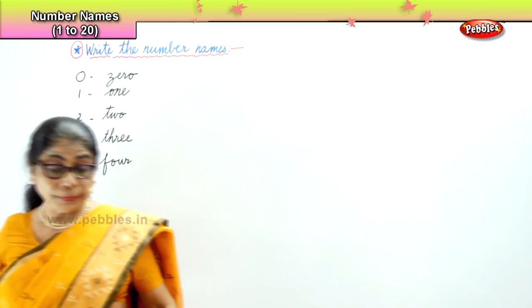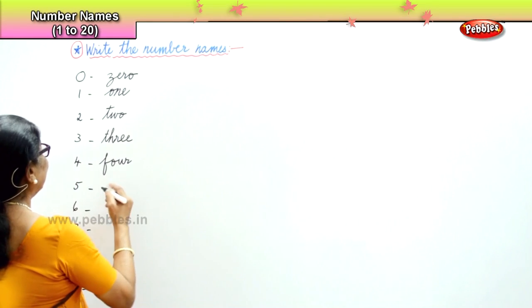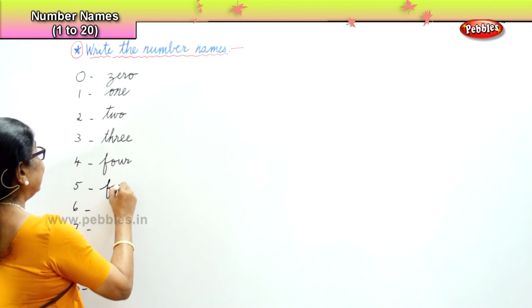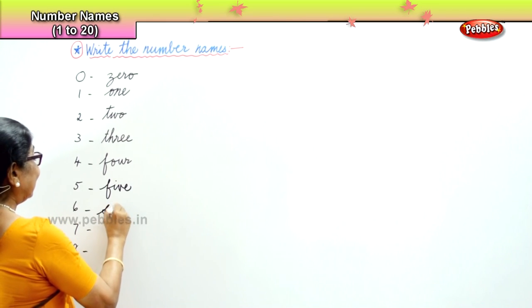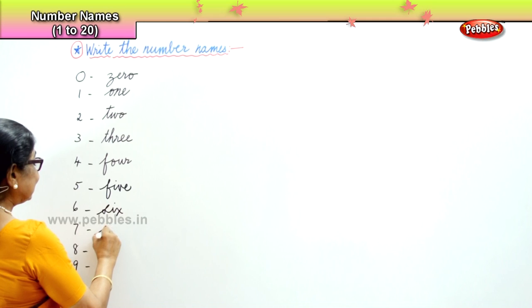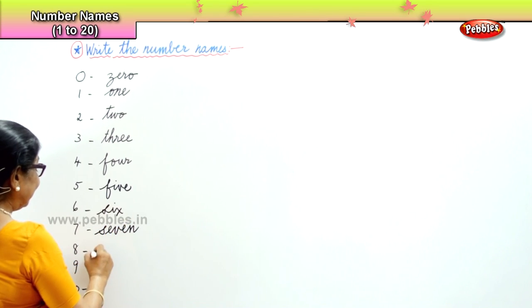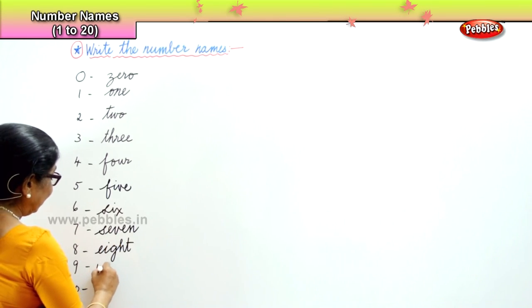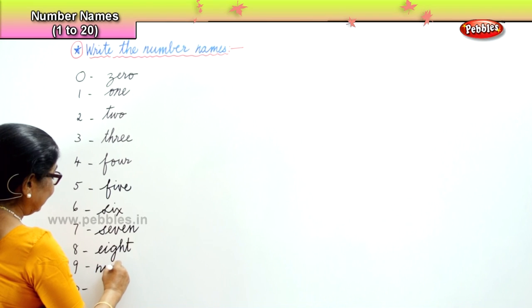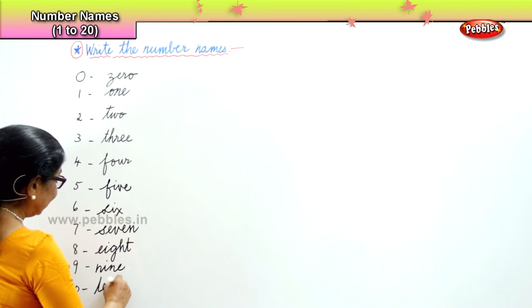5 — F-I-V-E. 5. 6 — S-I-X. 6. 7 — S-E-V-E-N. 7. 8 — E-I-G-H-T. 8. 9 — N-I-N-E. 9. And finally you have 10.